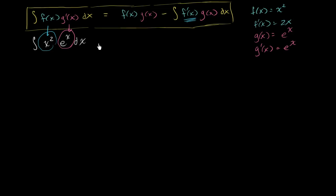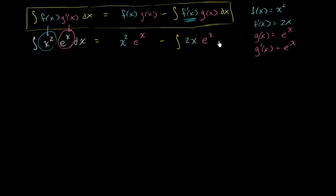So this expression is going to equal f of x times g of x — that's x squared times e to the x — minus the antiderivative of f prime of x times g of x. f prime of x is 2x and g of x is e to the x, so we get minus the integral of 2x times e to the x dx. We're left with another indefinite integral. How do we solve this one? As you might guess, the key might be integration by parts again.